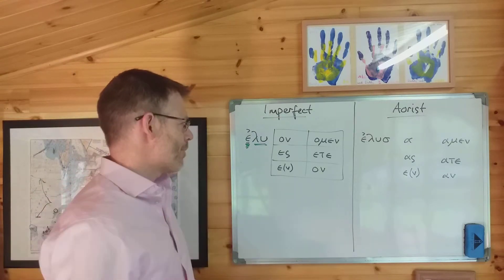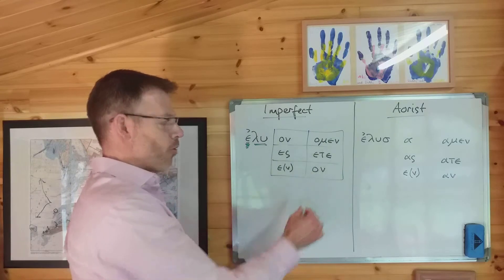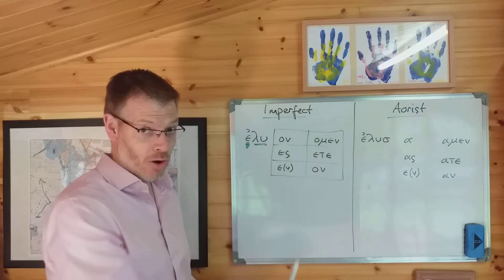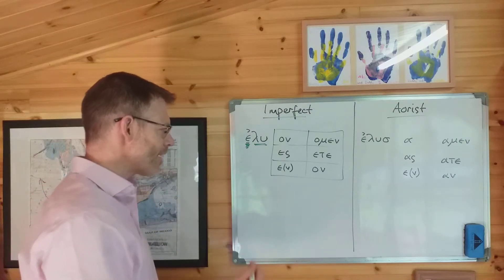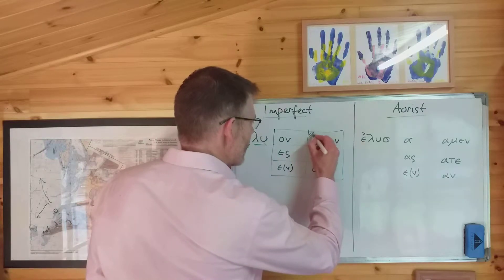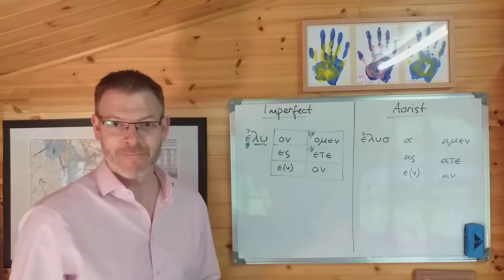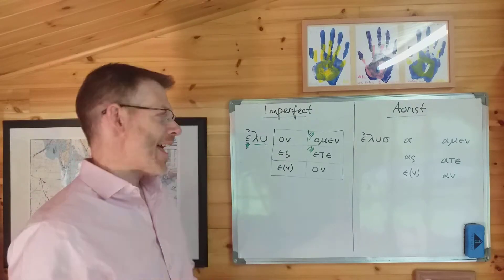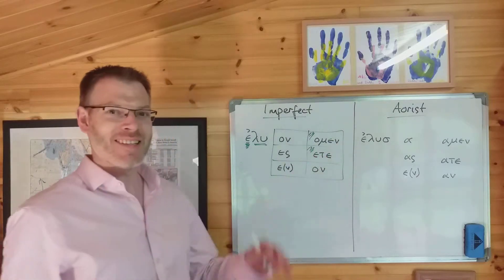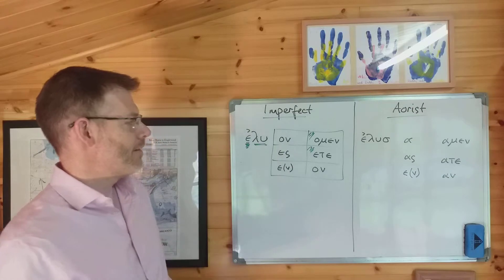So here are the endings for the imperfect. Some things to notice here. First up, notice — more good news — this and this are the same as in the present. So you're already a third of the way there with the imperfect: first plural and second plural are the same as the present, and indeed the future endings — omen and ete.